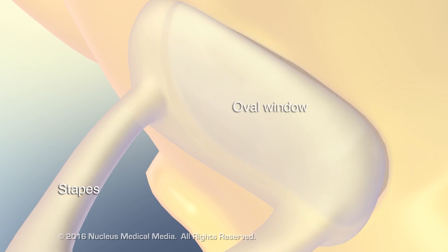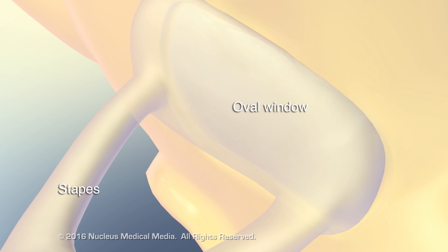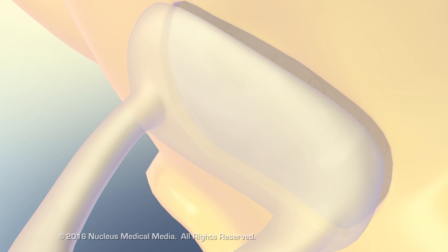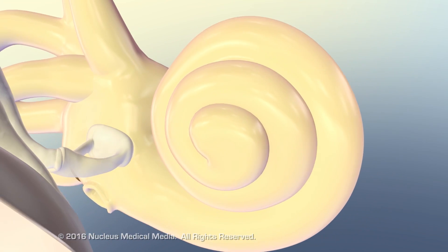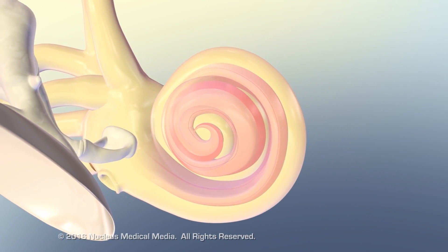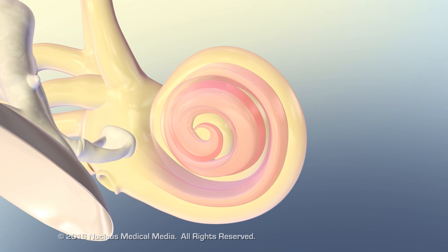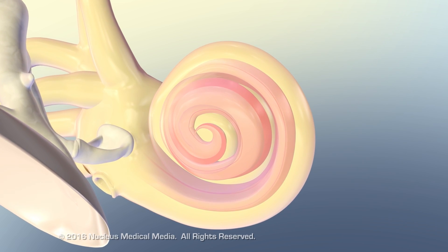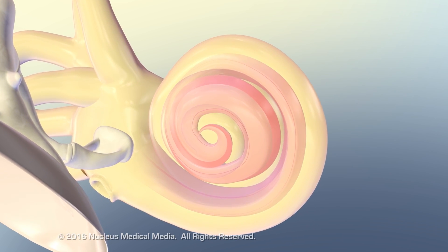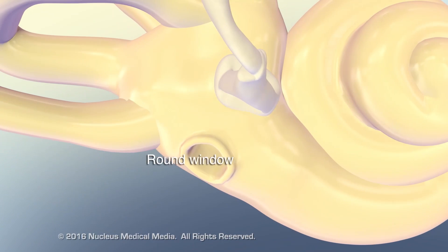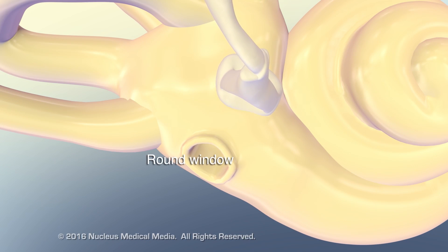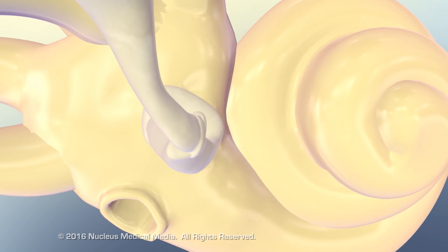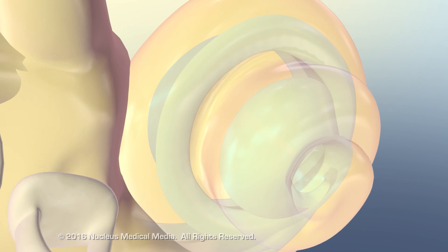Movement of the stapes causes vibrations of the membranous oval window of the inner ear. Oval window vibrations create fluid waves in the two perilymph-filled chambers in the cochlea, ending at the round window. These waves of perilymph also push on a third fluid-filled chamber, called the cochlear duct.